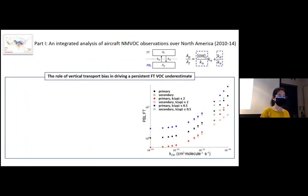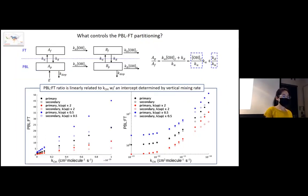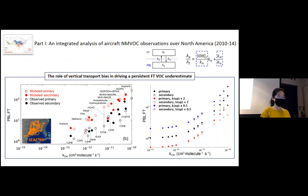This relationship is demonstrated in this plot here. Although we are not able to solve the steady-state equation analytically for secondary VOC B, this plot shows that B follows the same relationship as that of A. Then we bring the real model and observation data into the same coordinate, and found that both the model and observation present the same shape as the two-box model assumption, and there is a consistent offset between the model in red and the observation in black, which is driven by the vertical mixing rate as explained by the two-box model. The two-box model analysis therefore further supports there is a vertical transfer bias or an inadequate PBL ventilation in the model that's driving the consistent free troposphere VOC underestimation.